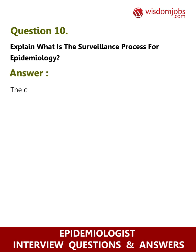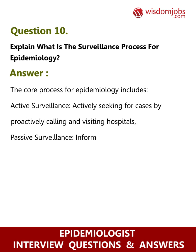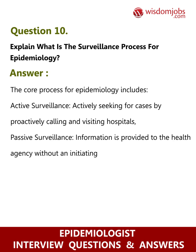Question 10: Explain what is the surveillance process for epidemiology. Answer: The core process for epidemiology includes active surveillance — actively seeking for cases by proactively calling and visiting hospitals — and passive surveillance, where information is provided to the health agency without an initiating action by the agency.